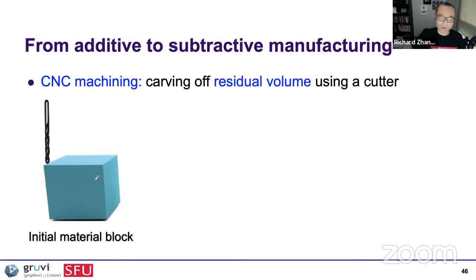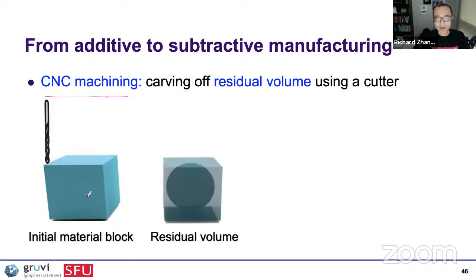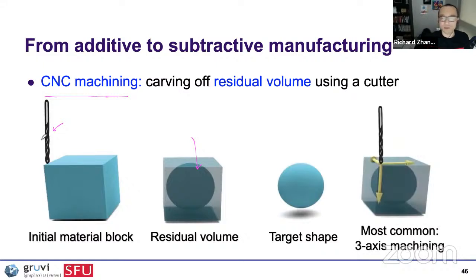That was additive manufacturing — 3D printing — where you build things layer by layer. We also came across a very interesting problem for subtractive manufacturing. The primary way to do subtractive manufacturing is CNC machining — Computer Numerical Control. You start with an initial material stock, like a big cube, and have a target shape. The rest is the residual volume, and the process is to carve off the residual volume using a cutter. The most common CNC machine performs three-axis machining: the cutter moves up and down and in the X and Y directions.